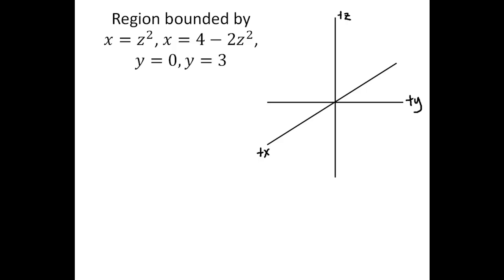It's not going to be exactly that shape, but it should be some sort of closed-in thing. When we have several surfaces like this, there are a couple of different ways to do it. Especially when you're just getting started, it can be helpful to graph each of these separately, or at least think briefly about what each of the surfaces looks like separately before you try to put it all together.